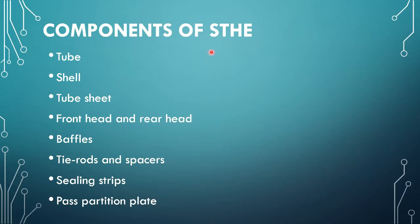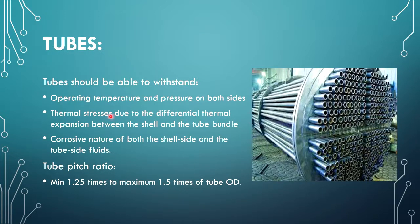These are the main components of the shell and tube heat exchanger: tubes, shell, tube sheet, front head, rear head, baffles, tie rods and spacers, sealing strips, and pass partition plate. Let's discuss each one in detail. The first component is the tubes.